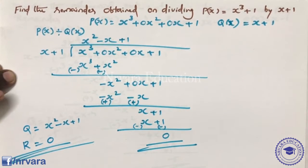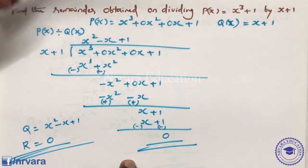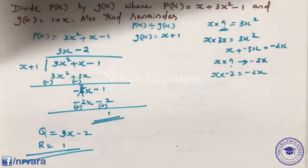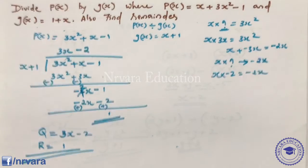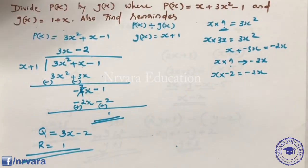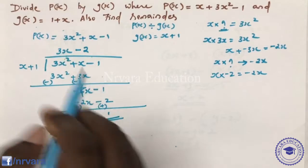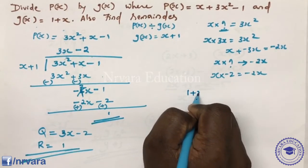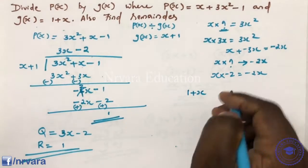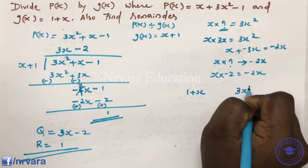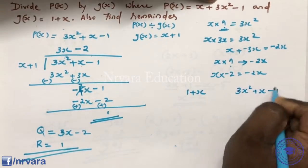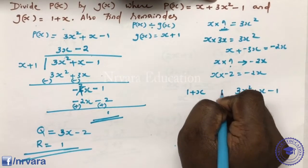Are you okay? Do you have any questions? Now we have the first question. P of x and G of x — what is the remainder when P of x is divided by G of x? Here P of x is 3x squared plus x minus 1 and G of x is 1 plus x.